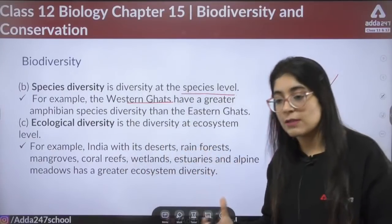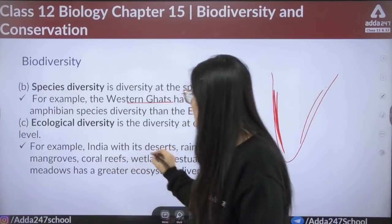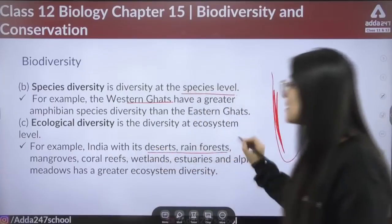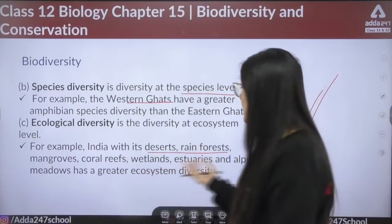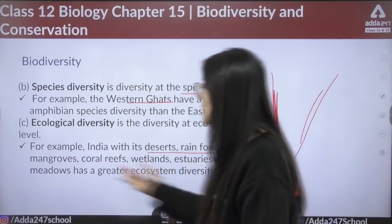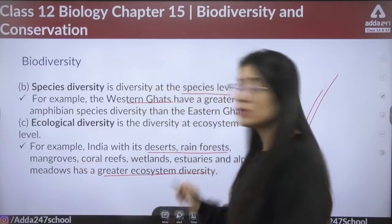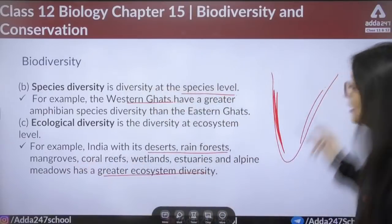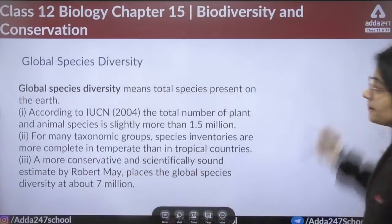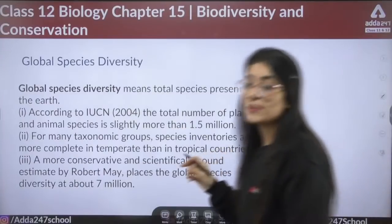Species diversity is the diversity at the species level. For example, at the Western Ghats there is greater amphibian species diversity than the Eastern Ghats. Third is ecological diversity, which is diversity at the ecosystem level. India with its deserts, rainforests, mangroves, coral reefs, wetlands, estuaries, and alpine meadows has greater ecosystem biodiversity.